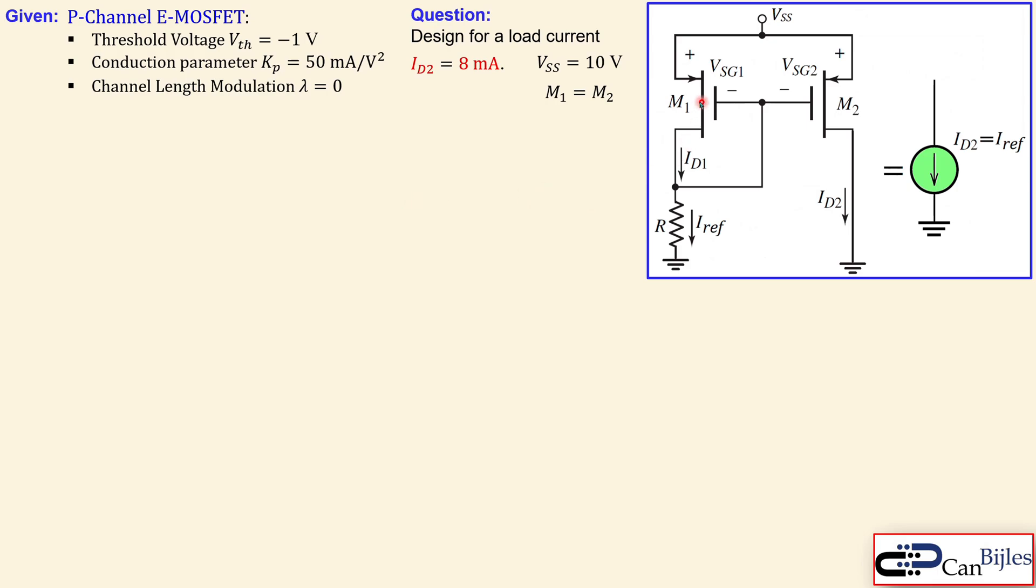Let's look at our circuit. We have two P-channel MOSFETs in enhancement mode. We have the simple current mirror configuration discussed in example number one. VSS is 10 volts. M1 and M2 are matched with the same physical dimensions and channel length modulation is zero. The conduction parameter Kp is 50 milliamps per square volts, and the threshold voltage VTH is minus one volt for each transistor.